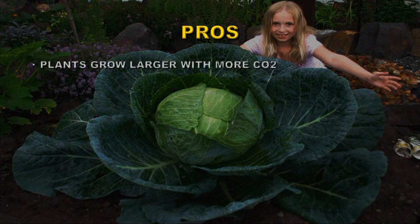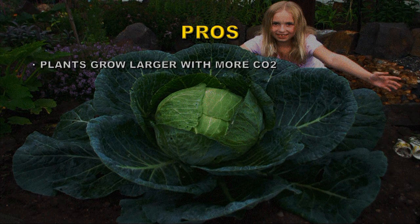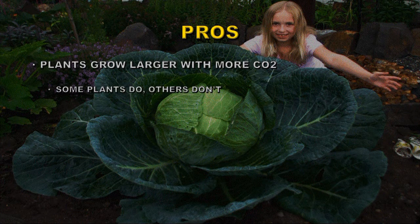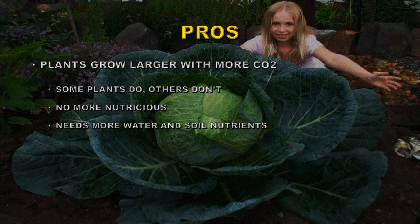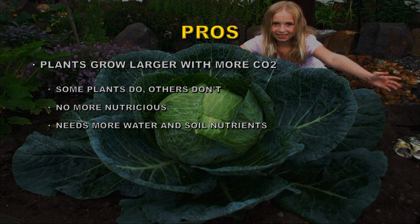The most often used argument is that plants grow larger with more carbon dioxide in the atmosphere. Now that's true, but it's only true for some plants, not all plants. Those larger plants are no more nutritious than the smaller ones unless you add a lot of water and nutrients to the soil. Additional nutrients in the soil means more agricultural runoff and resulting problems in our lakes, rivers, and oceans.